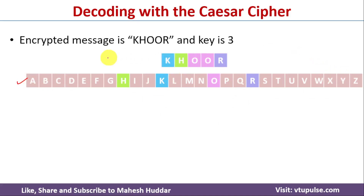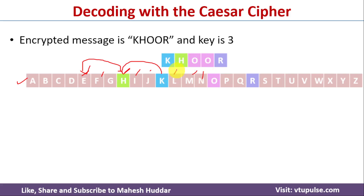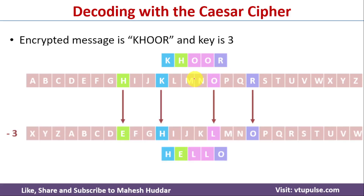Here we need to shift backward. For K, counting backwards 3 positions, K will become H. For H, shifting backwards 3 numbers, H will become E. For R, shifting back 3 positions, R will become O. So K becomes H, H becomes E, O becomes L, and R becomes O — the decoded word is H, E, L, L, O.